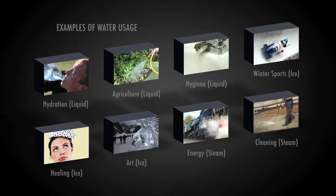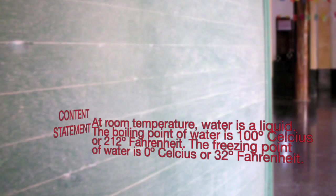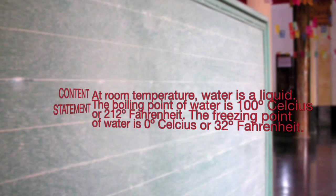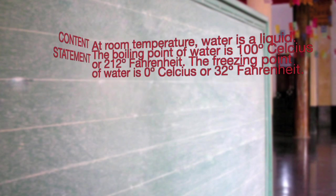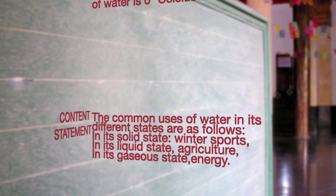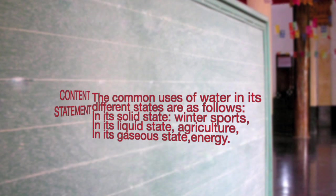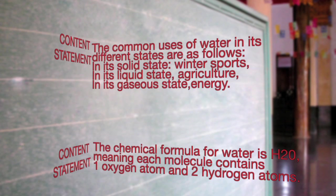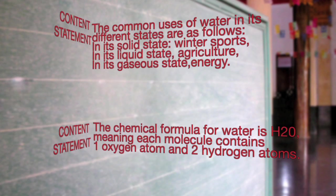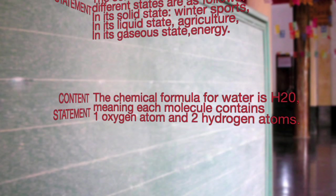Now that you have seen numerous ways the different states of water can be used, let's go over a few content statements. At room temperature, water is a liquid. The boiling point of water is 100 degrees Celsius or 212 degrees Fahrenheit. The freezing point of water is 0 degrees Celsius or 32 degrees Fahrenheit. The common uses of water in its different states are: in its solid state, winter sports; in its liquid state, agriculture; and in its gaseous state, energy.